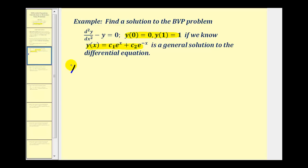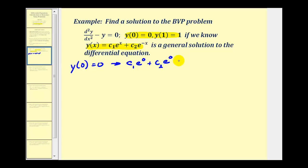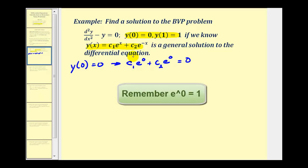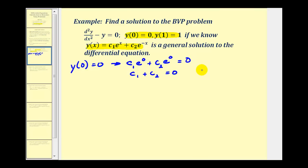Since y(0) = 0, we substitute zero for x into the general solution and set it equal to zero. So c₁e⁰ + c₂e⁰ must equal zero, which simplifies to c₁ + c₂ = 0. This means c₁ = −c₂ — they are opposites of one another. We'll keep track of this relationship.